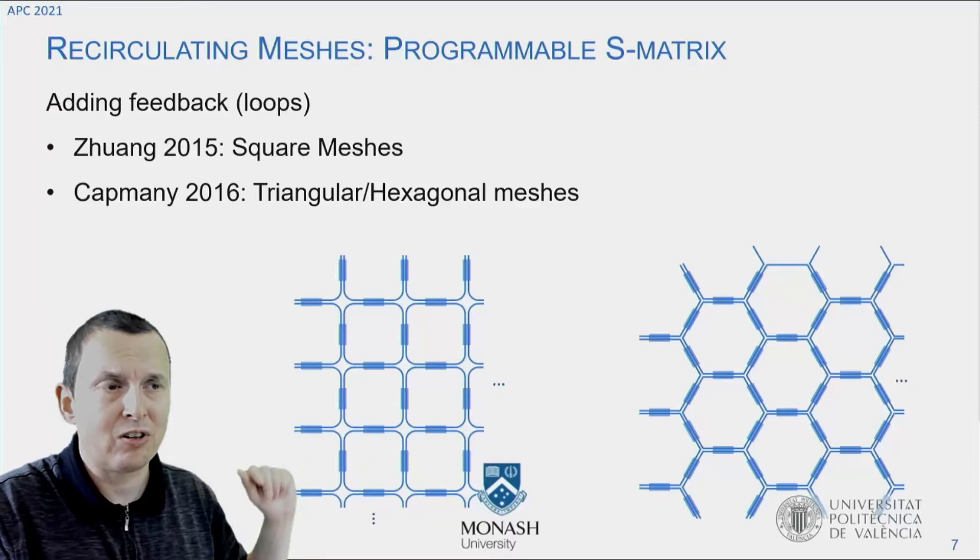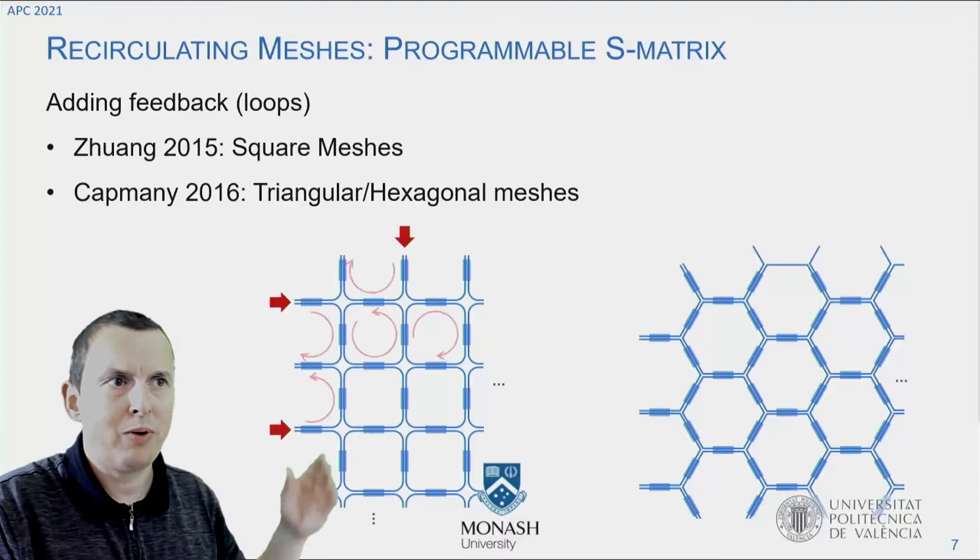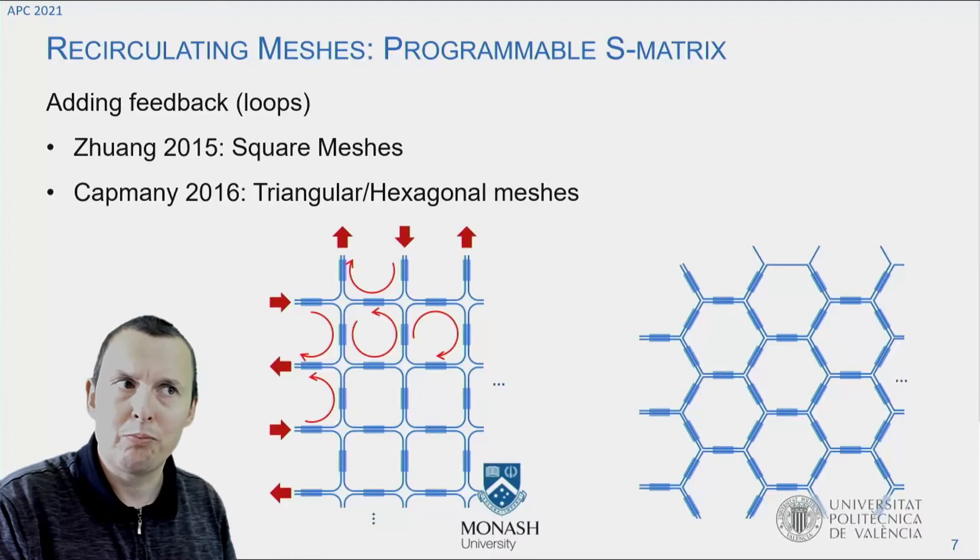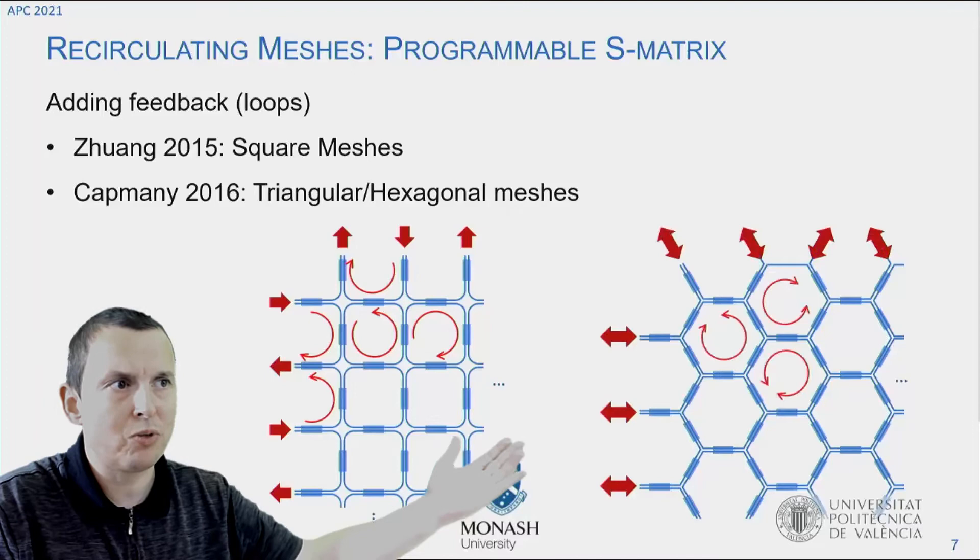Essentially, you take a set of loops, waveguides arranged in loops, with tunable coupling elements between all the loops. And that way, if you inject light, by coupling the light between the loops, you can circulate the light between all the ports. And you can do that with these square meshes, or you can do that with hexagonal meshes, which are a bit more flexible.